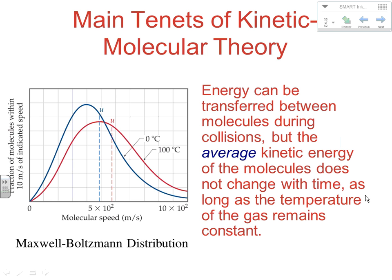Another thing that Kinetic Molecular Theory says is that the average kinetic energy of a substance at a given temperature is constant. This doesn't mean that all the particles are moving at the same speed, because kinetic energy is related to velocity by the equation ½mv². But if you're at a constant temperature, you're at a constant average kinetic energy. As particles collide, energy can be transferred between the two, but the average kinetic energy won't change — however much one particle picks up, the other particle loses. So there's no net change in kinetic energy as long as the temperature remains constant.